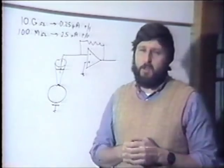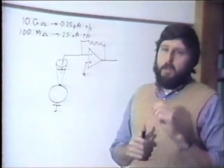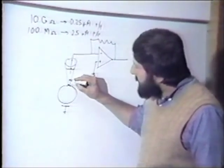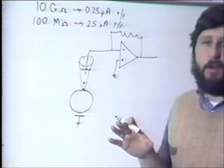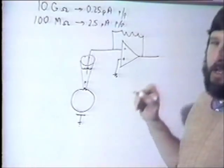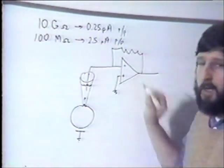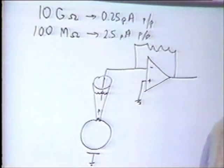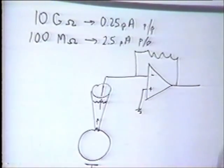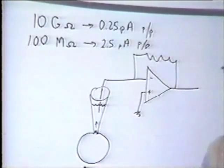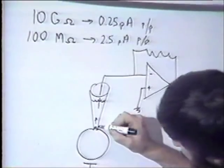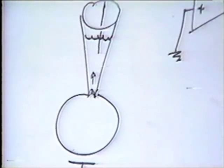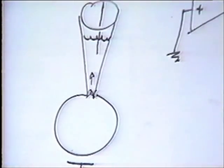How do you record single channels? The basic principle is to apply an electrode to the cell surface that will collect the current and amplify it with a current-to-voltage converter. The current-to-voltage converter keeps the electrode basically at ground potential. The standard current-to-voltage converter uses a high resistance feedback element — 10 gig-ohms to 50 gig-ohms. The key to making the single-channel measurement work is getting a tight seal between the membrane and this pipette. That resistance has to be, at minimum, one gig-ohm, and preferably much higher.